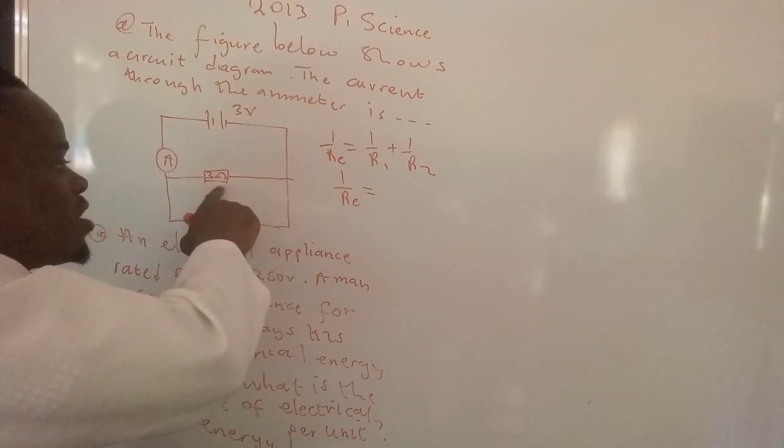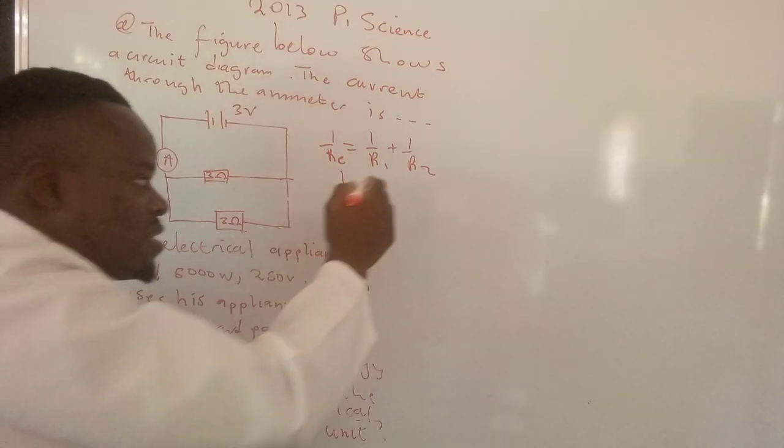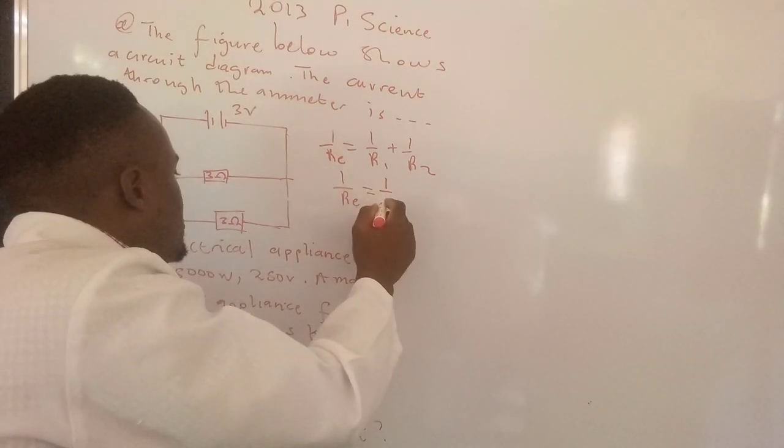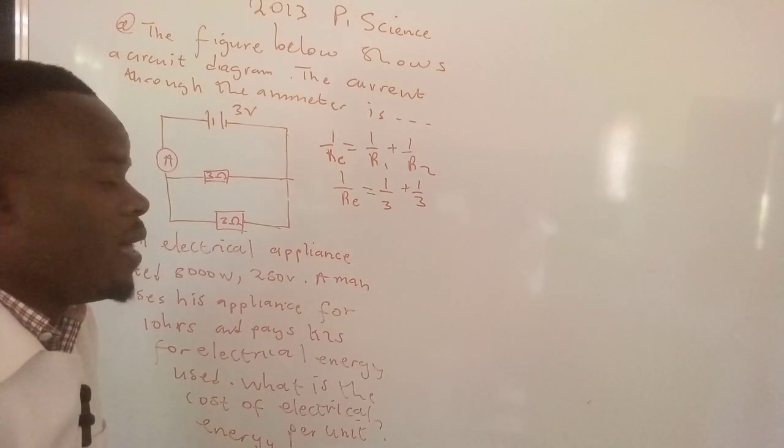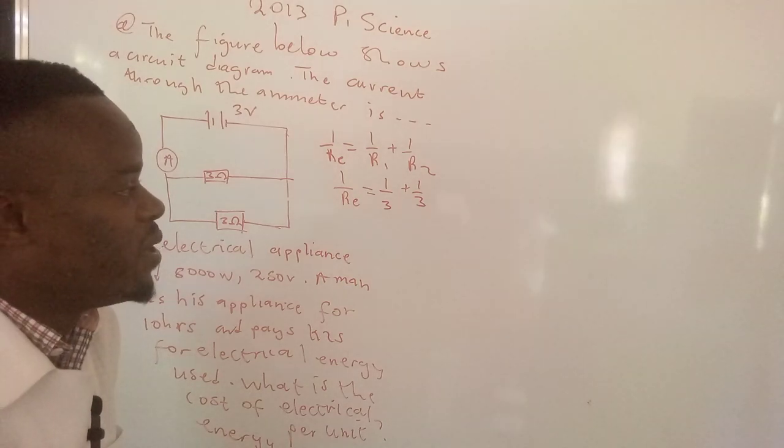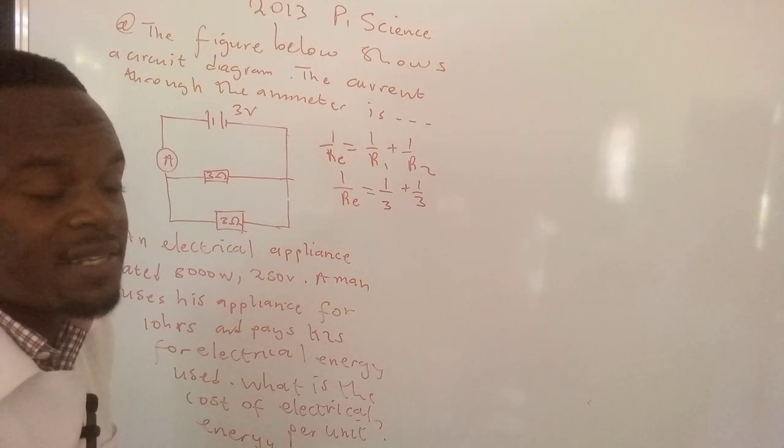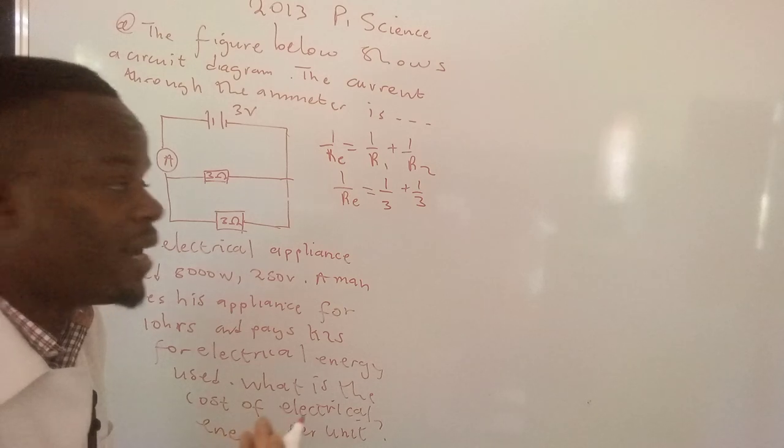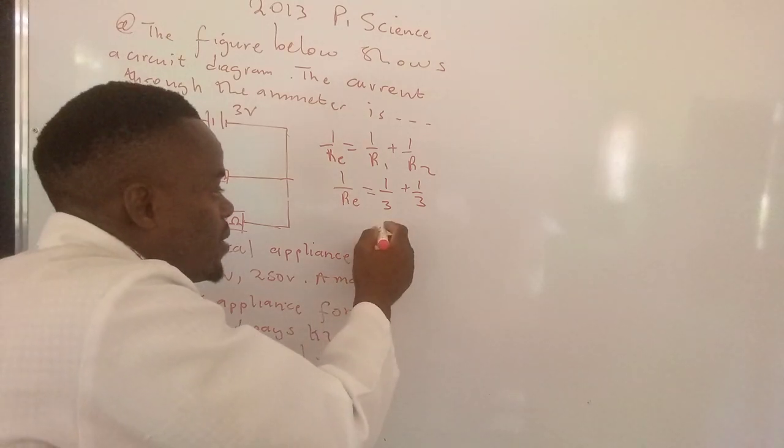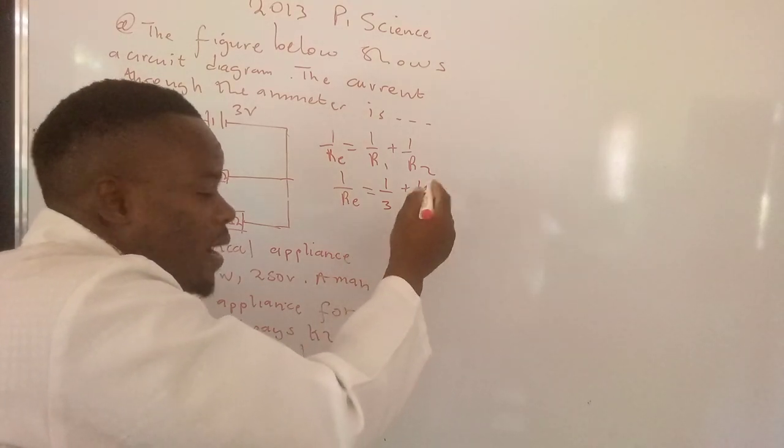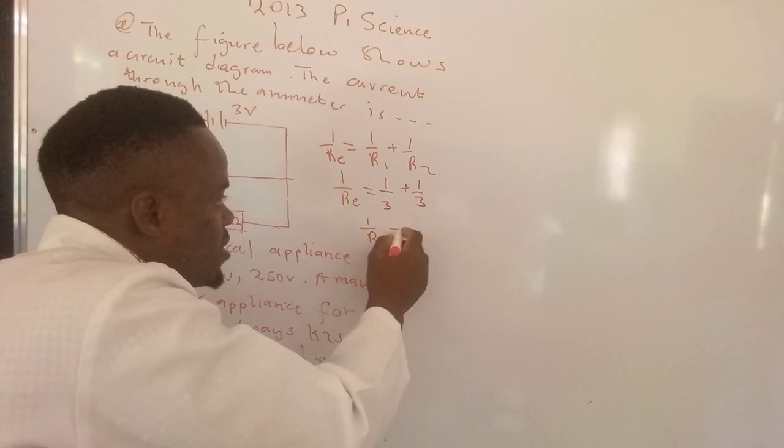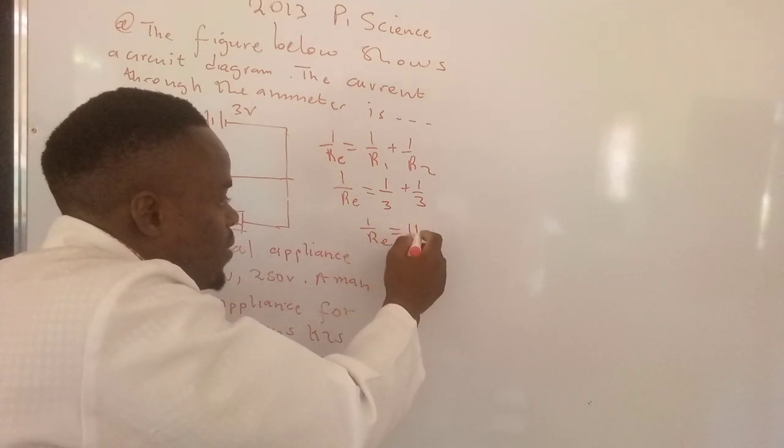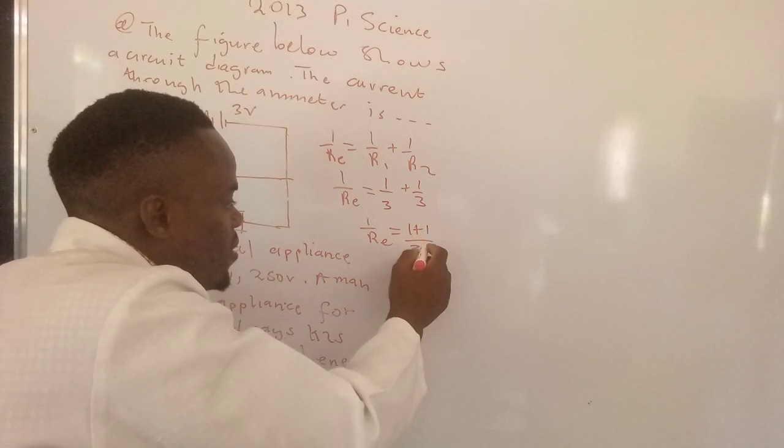We will name this one as resistor 1 and that one as resistor 2, so that's 1 over 3 and 1 over 3. When we have fractions with a common denominator, you simply add the numerators. We have 1 over RE which is equal to 1 plus 1 over 3 plus 3.